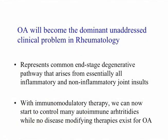I would predict that osteoarthritis will become the dominant clinical problem in the rheumatology clinic in the decades to come. Osteoarthritis represents a common end-stage degenerative pathway that arises from essentially all inflammatory and non-inflammatory joint insults — whether rheumatoid arthritis, psoriatic arthritis, gout, or traumatic injury — all converge upon the degenerative pathways of osteoarthritis. Furthermore, with current immunomodulatory therapies such as blocking TNF, we can now start to control some autoimmune arthritis, while in contrast there are no disease-modifying therapies currently available for osteoarthritis.